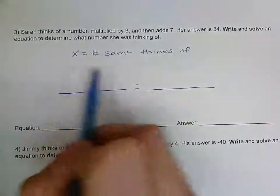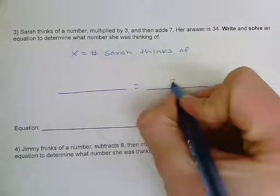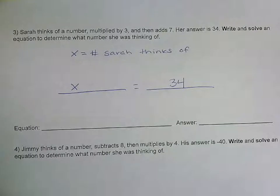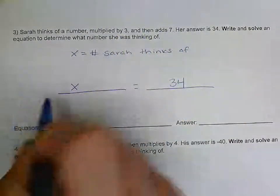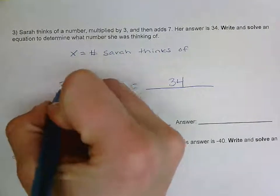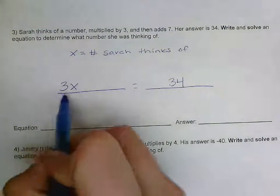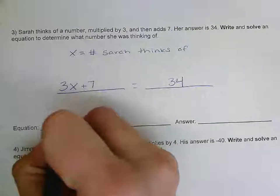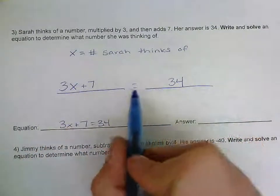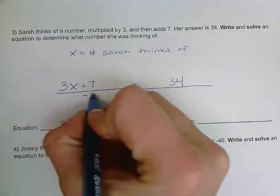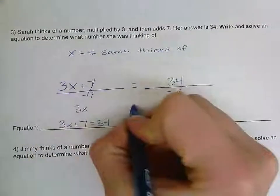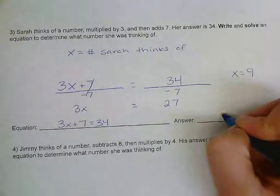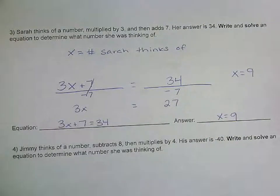We have an action and a result — she's doing something to a number and her answer is 34, so 34 is our result. On the left side: she thinks of a number X, multiplies it by 3 first, then adds 7. So our equation is 3x plus 7 equals 34. We subtract 7 from both sides, leaving 3x equals 27, then divide by 3, and x equals 9.